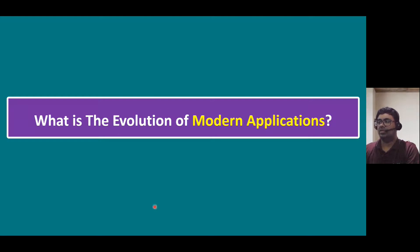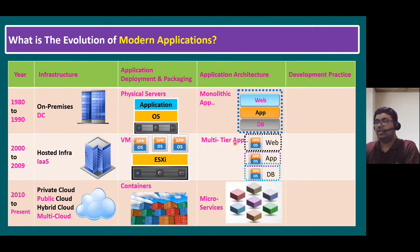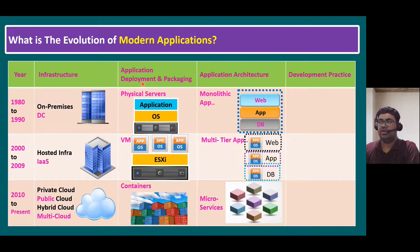What is the evolution of modern applications? We already covered this in previous sessions, but let's quickly recall. In the years 1980 to 1990, most organizations ran infrastructure on on-premises data centers, developing and packaging applications directly on physical servers. Within each physical server, we would install an operating system — Windows, Linux, Solaris, or another OS — and on top of that, install our business applications.